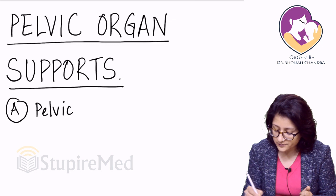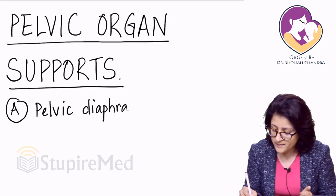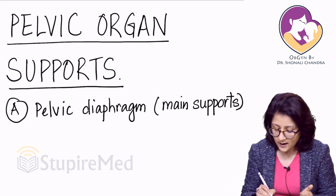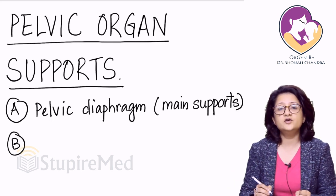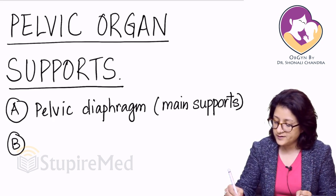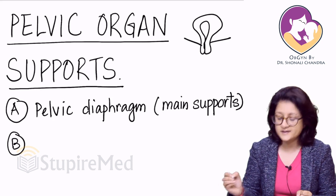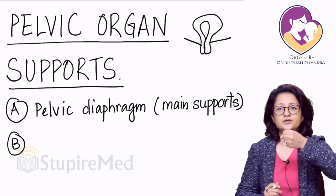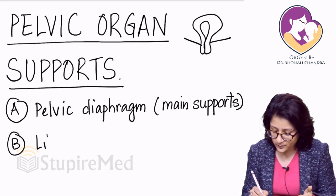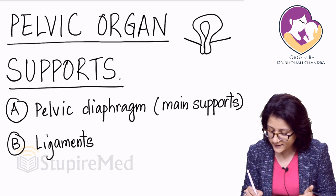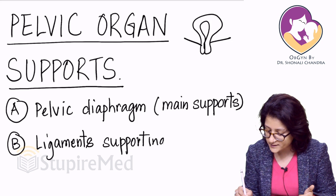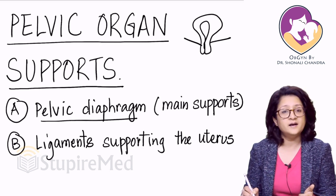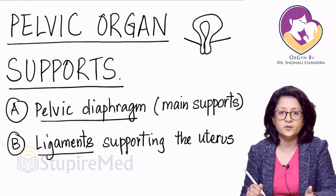We have the pelvic diaphragm as our main support for the pelvic organs. Apart from the pelvic diaphragm, there are also ligaments holding the uterus in position — all around like a ring. So we have: A, the pelvic diaphragm, and B, the ligaments supporting the uterus.